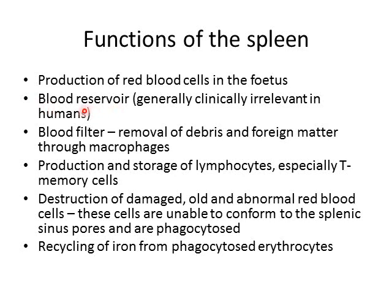The spleen pulls a lot of blood into itself, just like the liver, and this can function as a blood reservoir, but this is clinically insignificant in humans. If you compare it to the horse's spleen, which is a pretty huge organ, the horse when in shock will have a flood of blood going into its circulation from its spleen. Something similar happens in humans, but the amount of blood pooled in the spleen is probably not terribly significant.